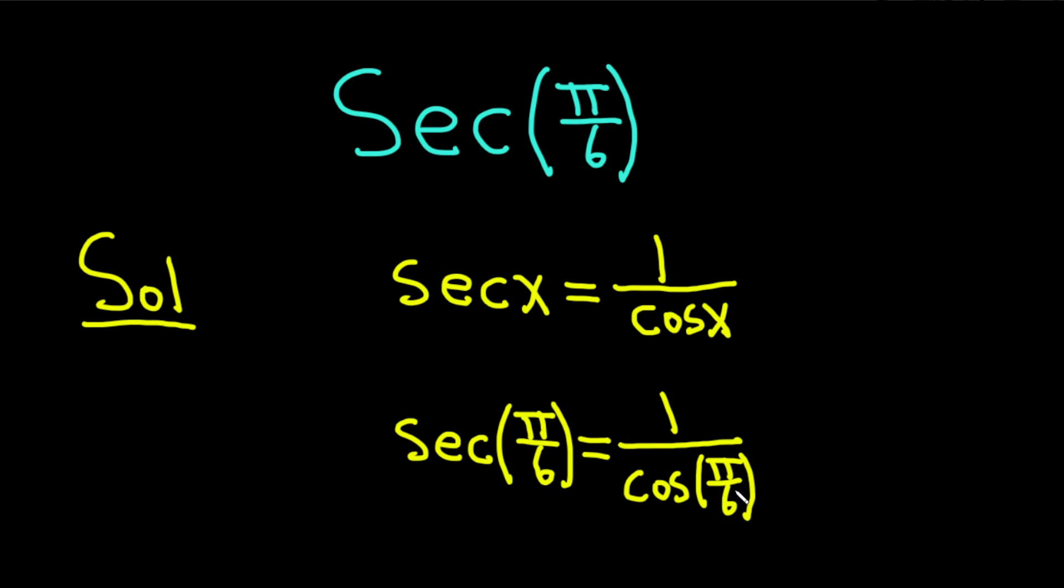But what is the cosine of pi over 6? It's the square root of 3 over 2. So, this is equal to 1 over parentheses square root of 3 over 2. It's really important to put the parentheses there. So, we have 1 divided by this fraction.